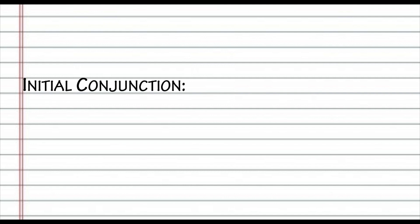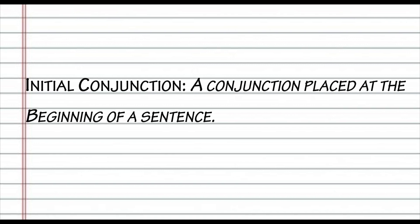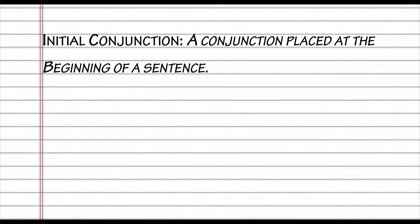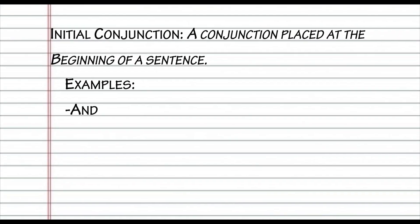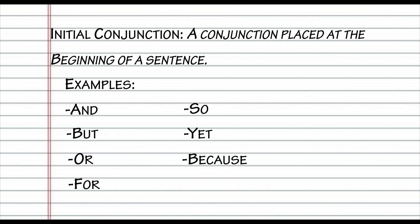Initial conjunctions are when you start your sentences with a conjunction, such as and, but, or, for, so, yet, or because.